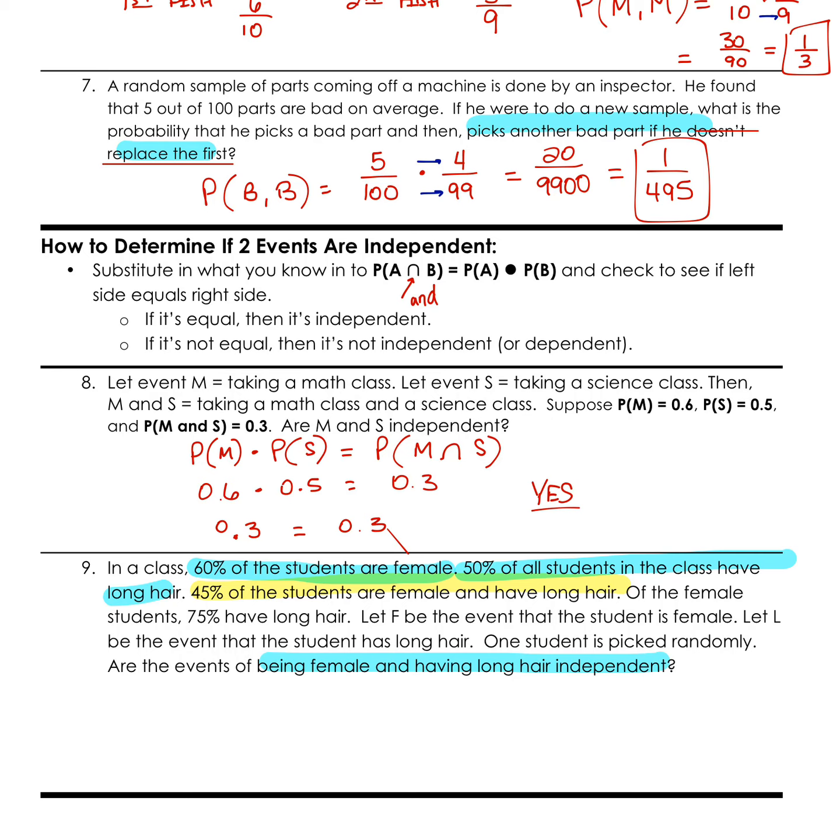And then, of course, we have our other piece, 50% of all students in the class have long hair. So we're going to take our math, and we're going to multiply them together. Because this piece right here, 50% of all students have long hair, has no bearing on the outcome of this problem. Because I don't care about the male students that have long hair. It doesn't affect me. The male students are not part of this event. So I want to know the probability of female, and I want the probability of having a female with long hair, and then I want to know the probability that it is female and have long hair. So probability of both.